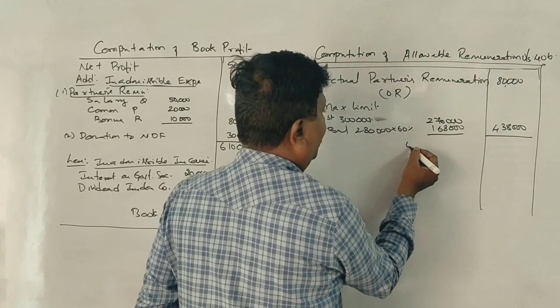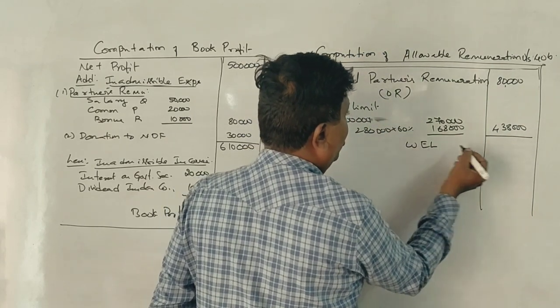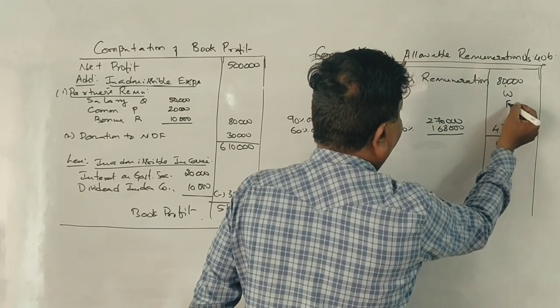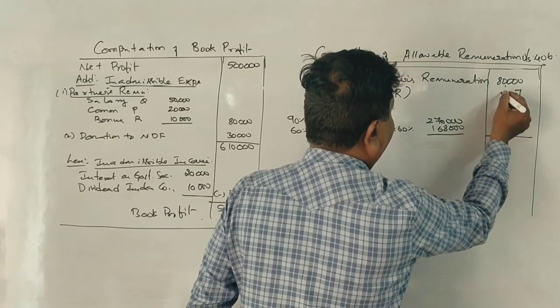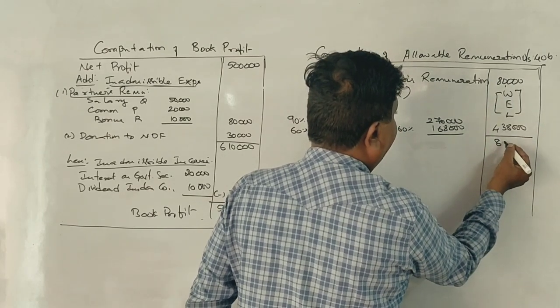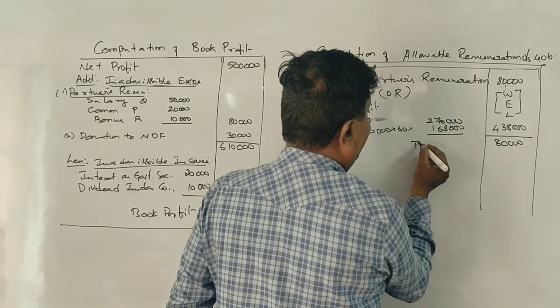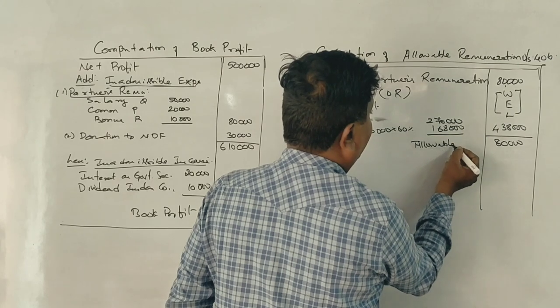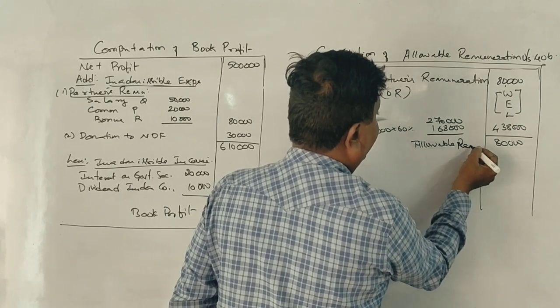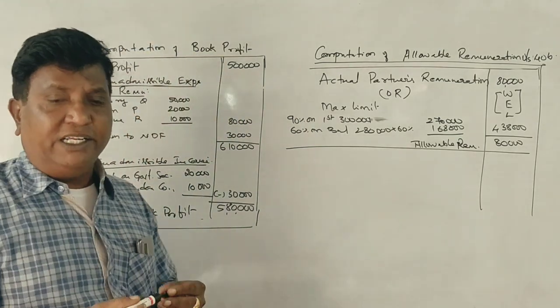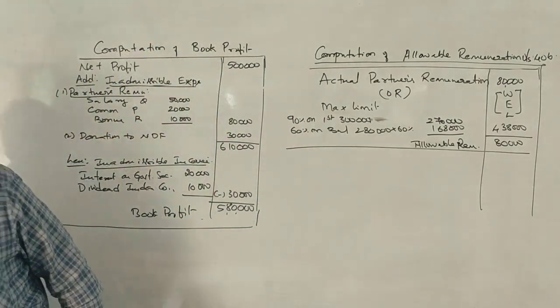If you have to take lower of actual or allowable, 80,000 is less than 4,30,000. So allowable remuneration for the partnership firm is 80,000.